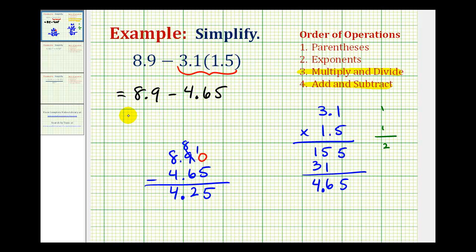So all of this simplifies to positive 4.25. We'll take a look at another example of simplifying expressions involving decimals in the next video.